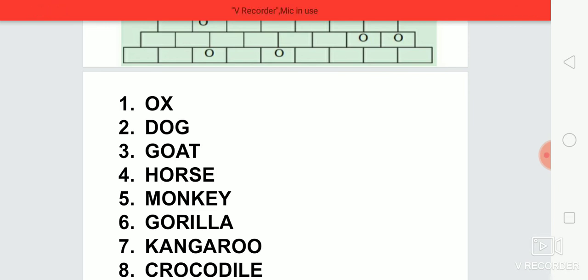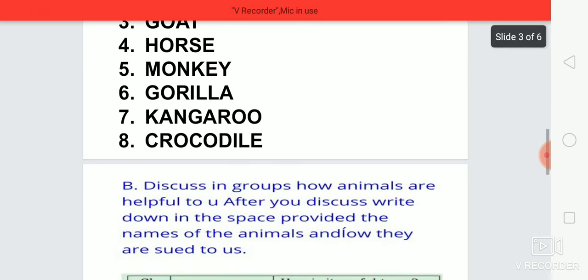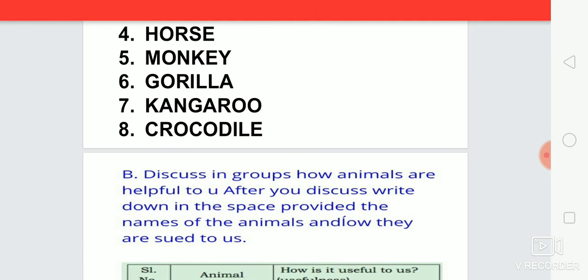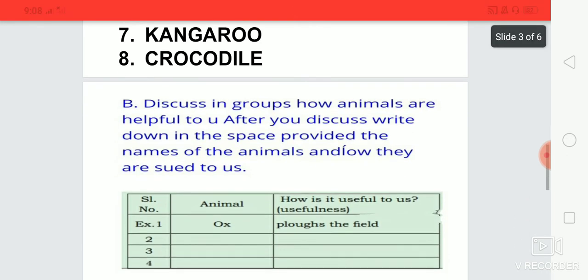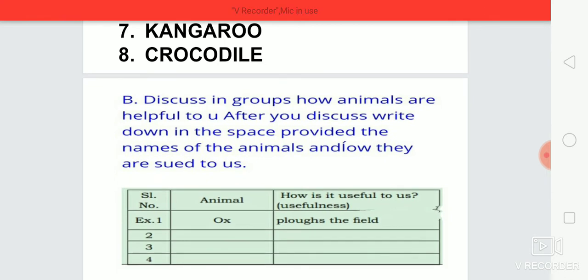Let us move to the next task, that is task B. What they gave? Discuss in groups how animals are helpful to us. After you discuss, write down in the space provided the names of the animals and how they are useful to us. You have to write the names of animals in the column which is named as animal, and its use in the last column, that is how is it useful to us.